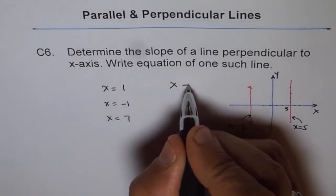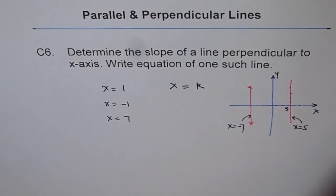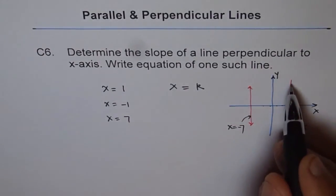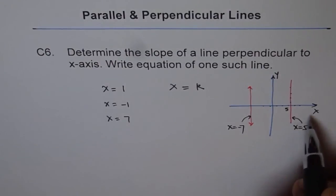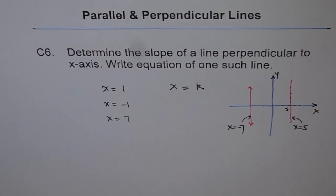For example, in general, x equals to k. Any value k will be a line which will be perpendicular to x-axis. Right? And parallel to y-axis. So that is how you can give many possible answers.